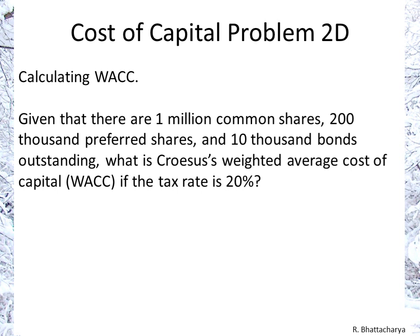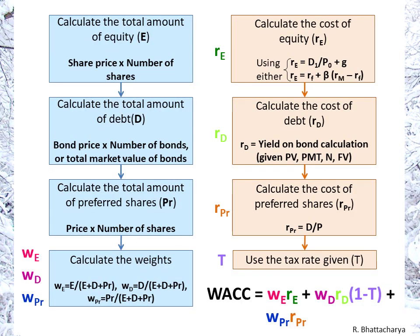Let's take a look at the overview. As you can see, we previously calculated the return on equity. Now we're calculating the required return on debt and preferred shares — we've done that for parts A to C. We now also have the tax rate. What we need to calculate now are the weights of all three of these.